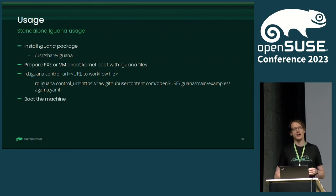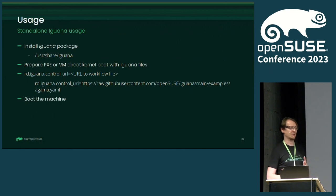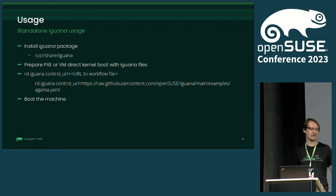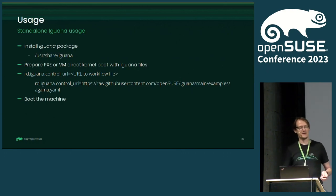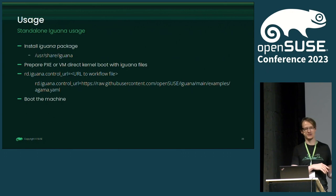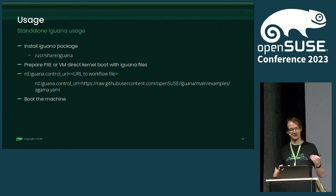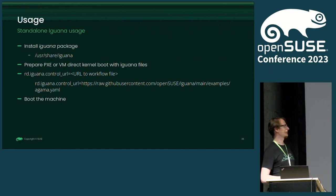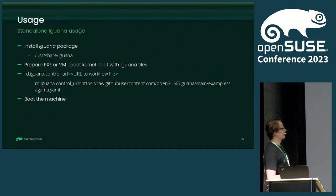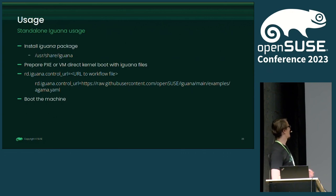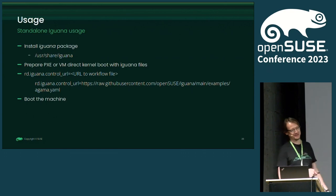One drawback: Agama containers do not have a graphical interface yet. So if you use Agama ISO Live ISO, you will get the Firefox window and so on. But if you use containers through Iguana, this is only for remote installation so far, because we don't have the container needed working on it yet. Once the container finishes, you just boot the machine and you will start Iguana.